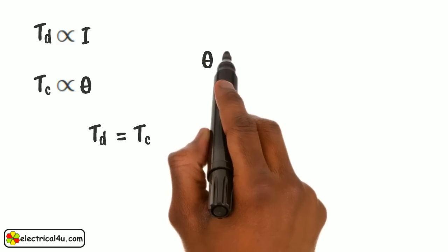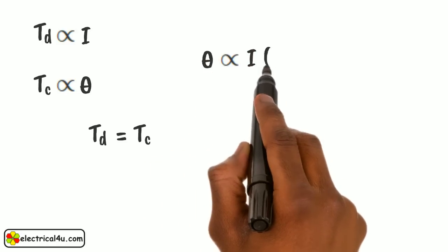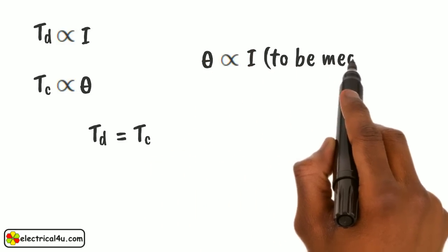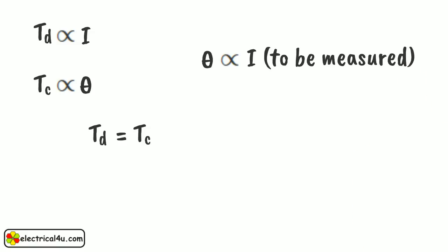Hence, θ is proportional to current I to be measured. Therefore, the system can measure the current efficiently. Hope you understand the concept. Thank you.